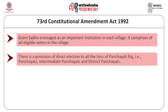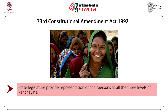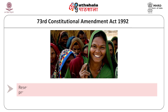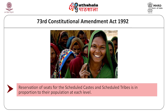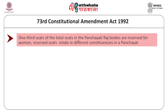There is a provision of direct election at all three levels of the Panchayati Raj institutions, which was not previously available to such a significant extent. The state legislature provides representation of chairpersons at all three levels of the Panchayats. There is also reservation for the Scheduled Castes, Scheduled Tribes, and women in the case of rural local bodies. For the Scheduled Castes and Scheduled Tribes, the provision is to have seats in proportion to their population to the total population of the area.